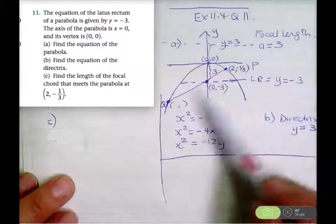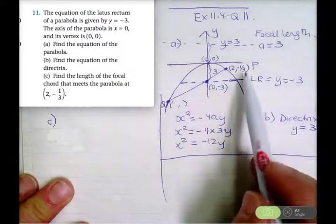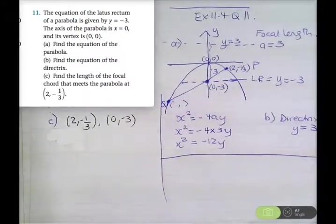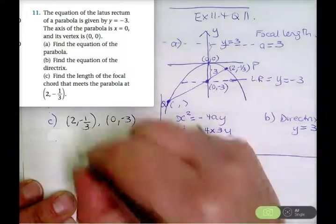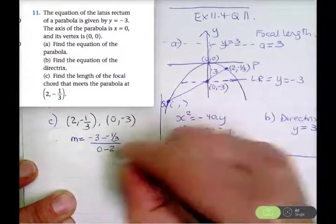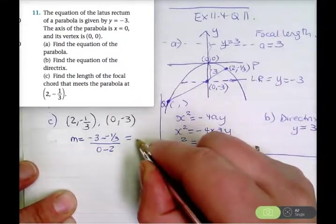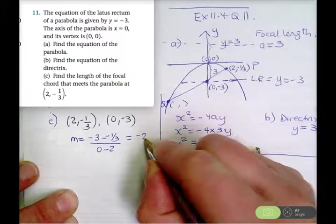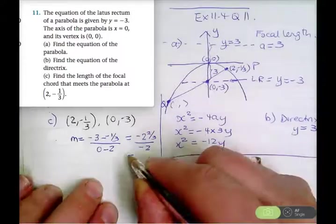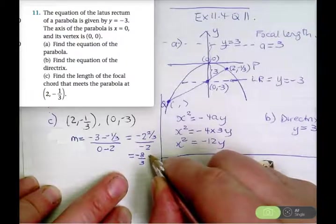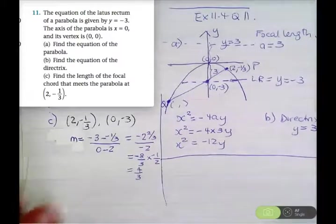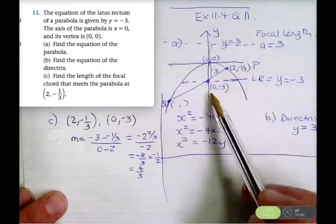Finding the equation of the focal chord: I have the points (2, negative 1 third) and the focus (0, negative 3). The gradient is (negative 3 minus negative 1 third) over (0 minus 2), which is negative 3 plus 1 third equals negative 2 and 2 thirds, divided by negative 2. That's negative 8 over 3 divided by negative 2, which equals 4 over 3.